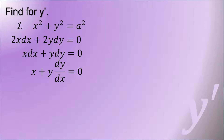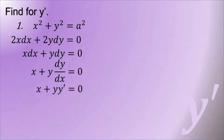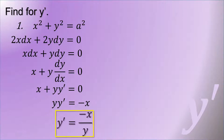Finding for y prime, since y prime is equal to dy over dx, we have x plus y times dy over dx equals 0. Transposing x from left to right, and then dividing both sides by y, that gives y prime equal to negative x over y.